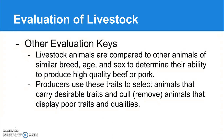Livestock animals are compared to other animals of similar breed, age, and sex. For example, you might look at a group of Angus heifers — all immature females under two years old. Comparing a heifer to a cow or bull is like comparing apples to oranges; you won't get an accurate evaluation of growth and breeding potential. Producers use these traits to select animals with desirable traits and cull animals displaying poor traits.